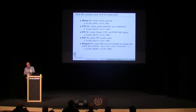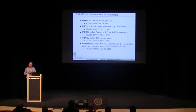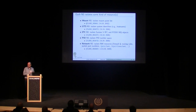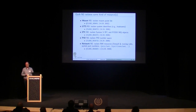PID namespaces isolate the process ID number space — from the container's point of view, you have a set of PIDs visible only inside the container, so you can have PID 1 in each container, which is the special init process. Network namespaces isolate network resources: network devices, socket port number space, various files in /proc and /sys. Each container can have its own virtual networking devices and port number space, so you can run a web server on port 80 in each container.